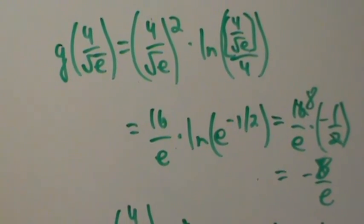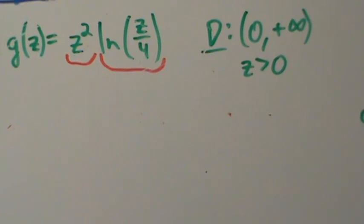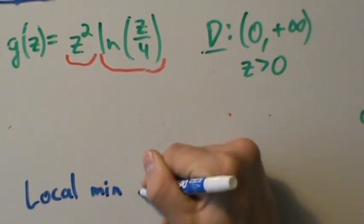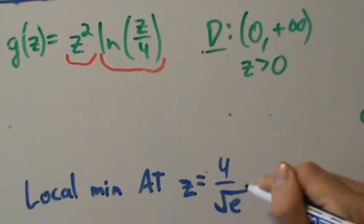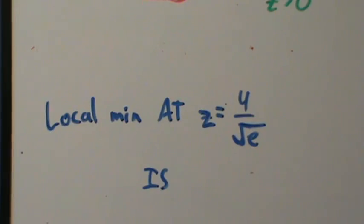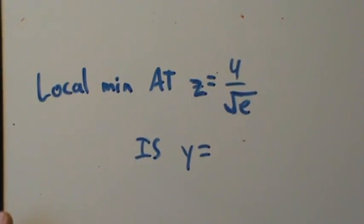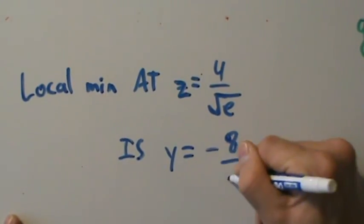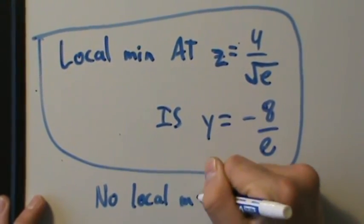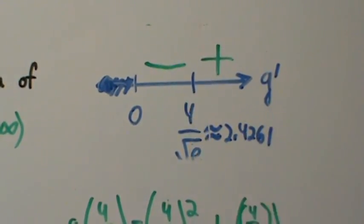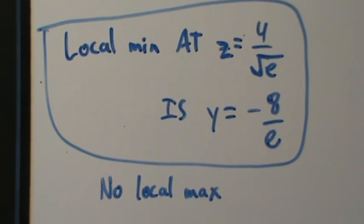Our final answer: local minimum at z equals 4 over root e, with y-value negative 8 over e. There is no local maximum. So we have just one local min at 4 over root e equal to negative 8 over e, and no local maxes. That's it for example 5 with the first derivative test.